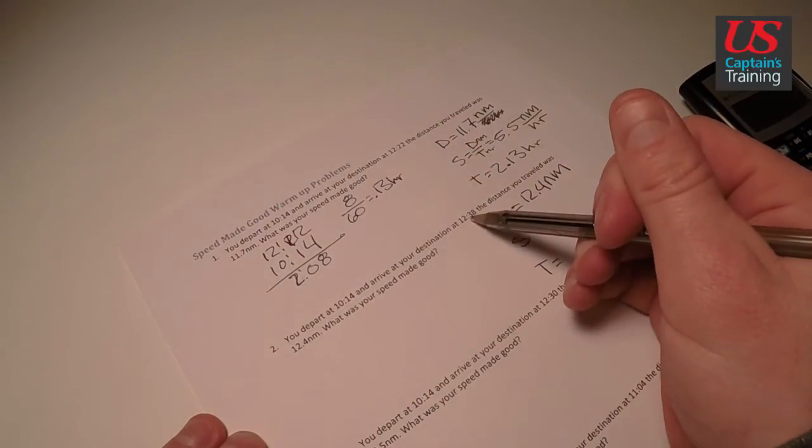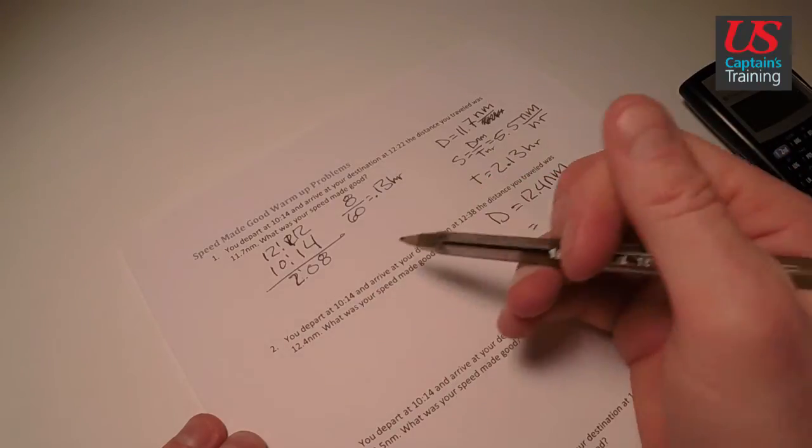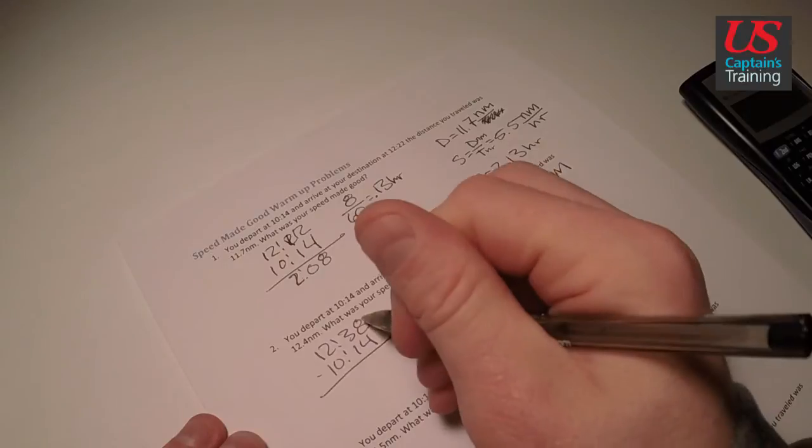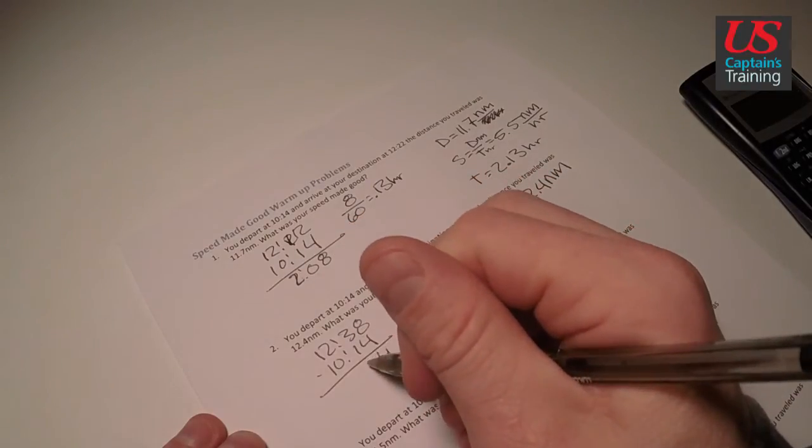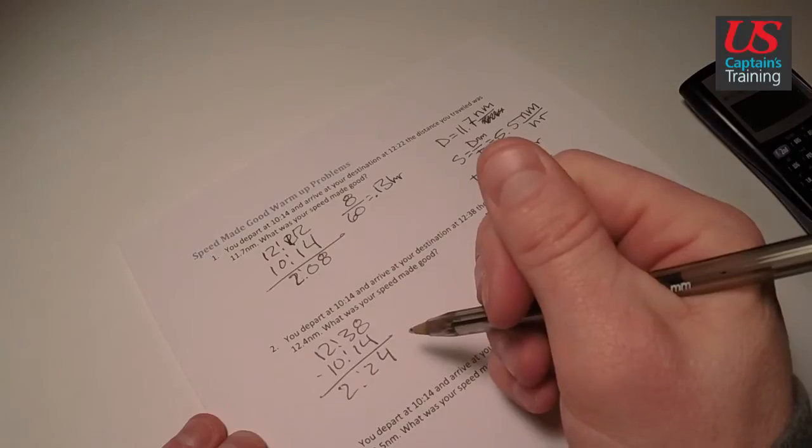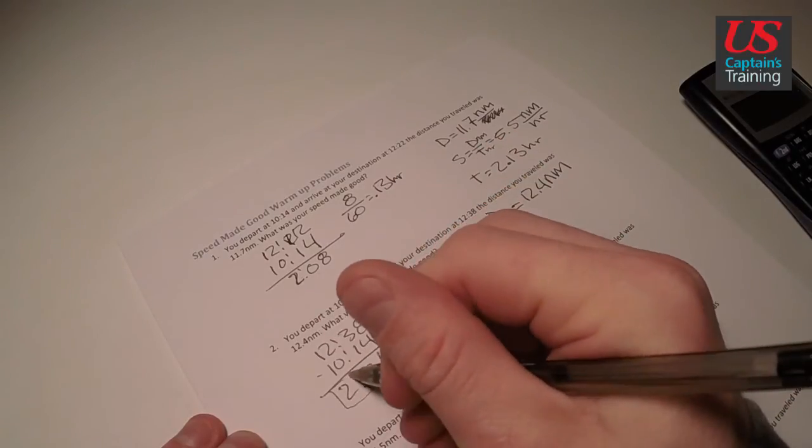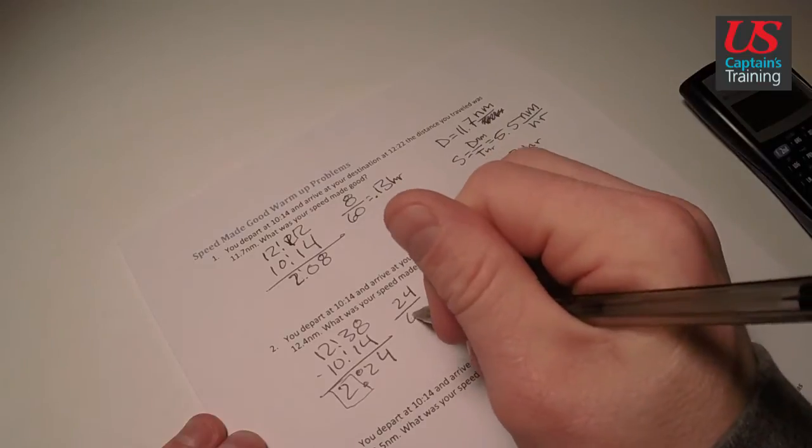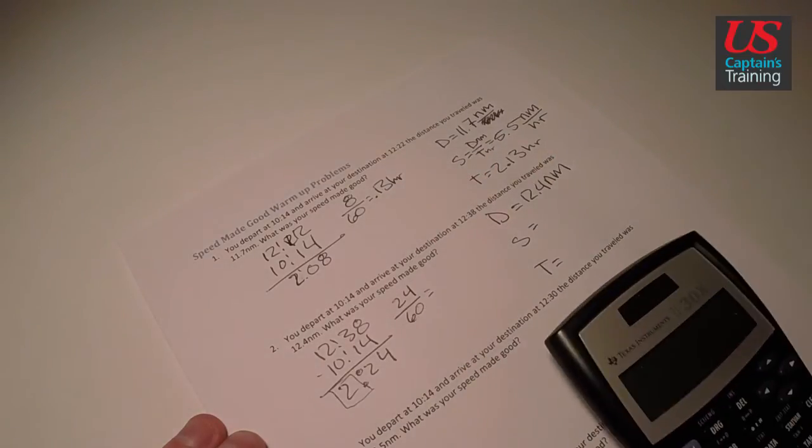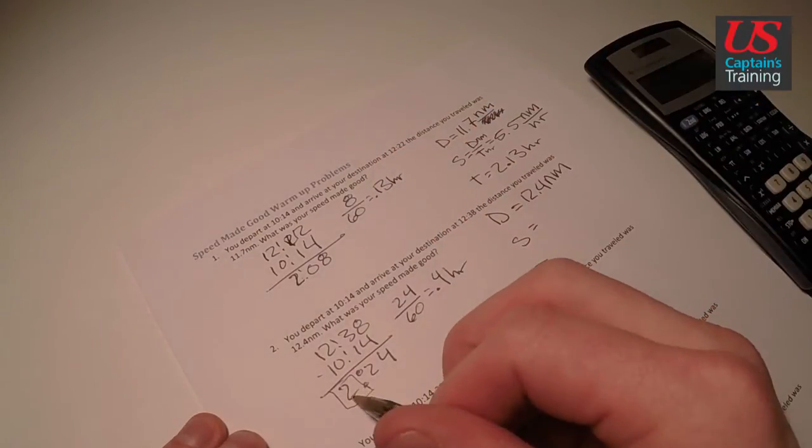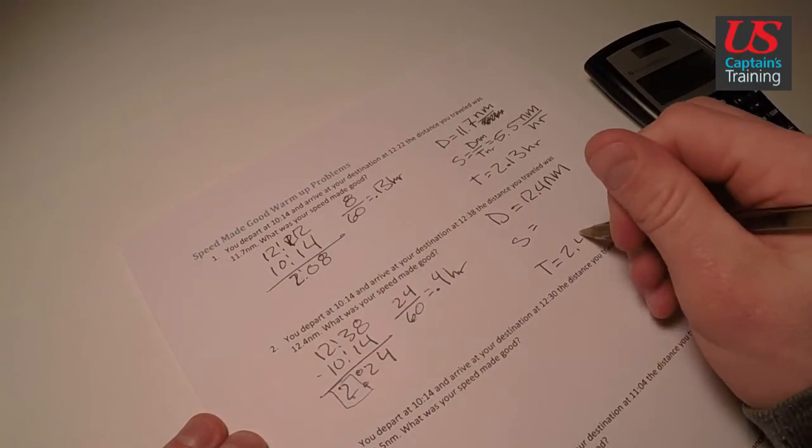Calculate the time. Our end time, we arrive there at 12.38 minus when we started, 10.14. So 12.38 minus 10.14 equals, 8 minus 4 is 4, 3 minus 1 is 2, 12 minus 10. So that's 2.24. And now, this 2 is good because that's an hour. This 24 minutes is what we're worried about. So 24 divided by 60, we get 0.4 hours. So our time is 2.4 hours.